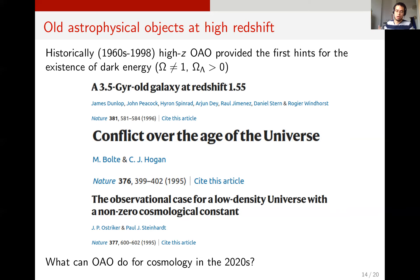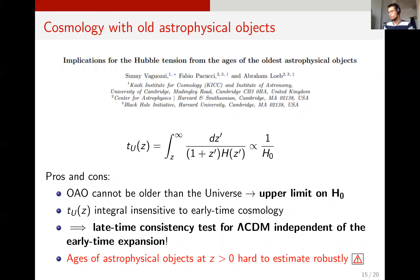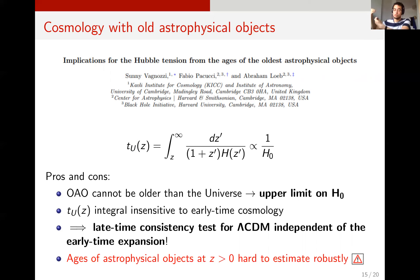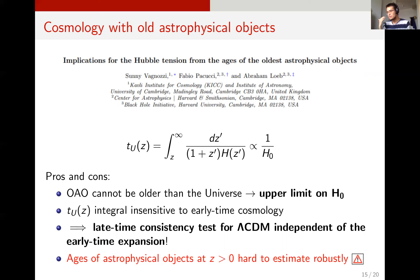Basically, you had objects at high redshift which were too old to be there — older than the universe itself. If you threw in dark energy, you allow the universe to be older and therefore accommodate these objects. Now, what can old astrophysical objects do for us in the 2020s? If you stare at the age-redshift relationship, you notice something really interesting: this relationship goes like one over H0 at all redshifts. So if I can identify the oldest astrophysical objects at several redshifts greater than zero, this allows me to set an upper limit on H0. This H integral gets most of its contributions from late times, from z roughly less than 2, so it's totally insensitive to what you assume about early time cosmology.